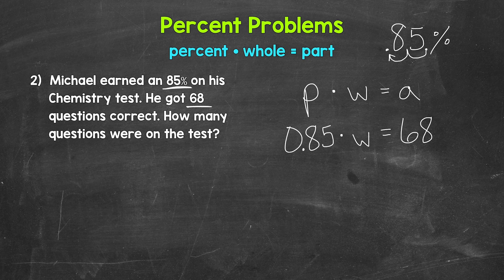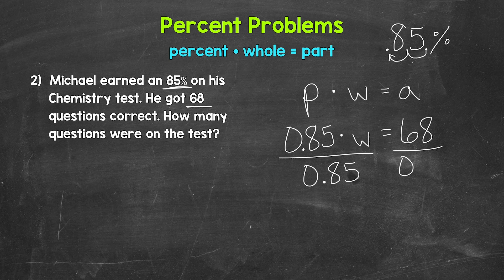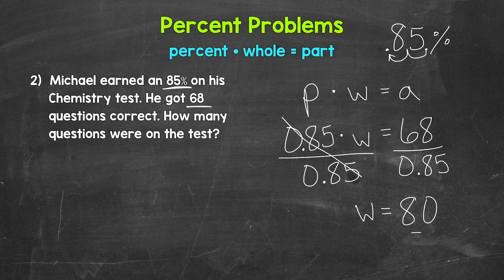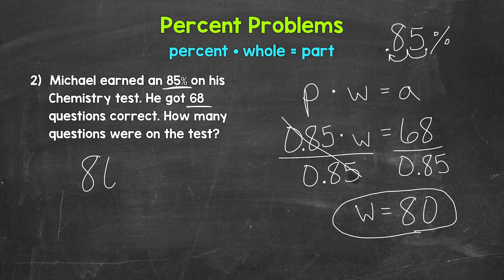So we need to isolate the variable W. W is being multiplied by 85 hundredths, so we need the inverse operation — division. Divide the left side of the equation by 85 hundredths. Whatever we do to one side of an equation, we must do to the other, so divide the right side by 85 hundredths as well. On the left, these cancel each other out and W is now isolated. On the right, we have 68 divided by 0.85, which gives us 80. So W, the whole, equals 80. Going back to the original question — how many questions were on the test? 80 questions.